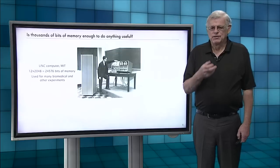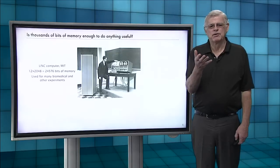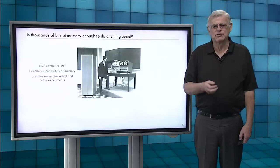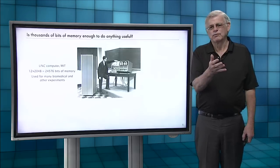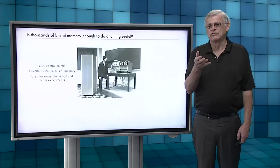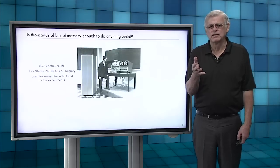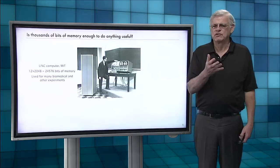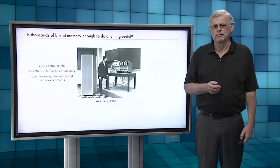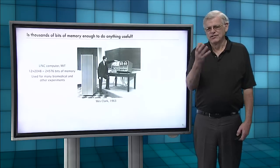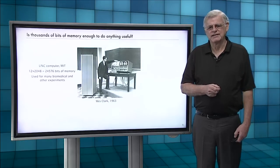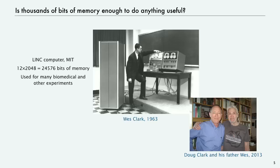Here's another example. This is an experimental computer at MIT. It's got more bits. It's got 24,000 bits. And this was earlier. This was in the late 1950s. And people were using computers like this, like toy, to do biomedical experiments and all sorts of other experimentation. This is a gentleman named Wes Clark in the early 1960s. And I put his picture up because his son, Doug Clark, is my colleague and has taught this course many times.